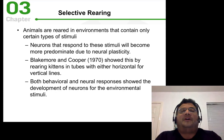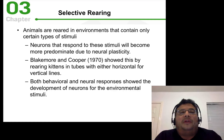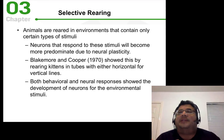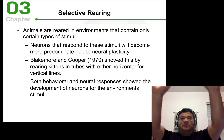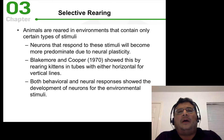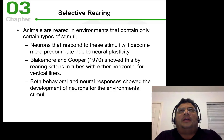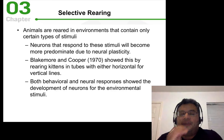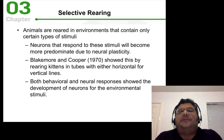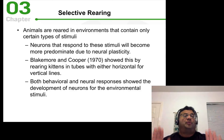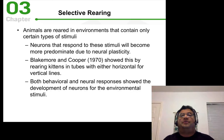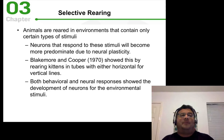Another set of experiments are selective rearing experiments, where animals such as kittens are raised in an environment made up of only vertical bars. If you look at the brains of these animals after they've matured, you'll notice that neurons detecting vertical bars — or horizontal bars if they were reared in a horizontal environment — are much more predominant in their cortices than in a normal animal.